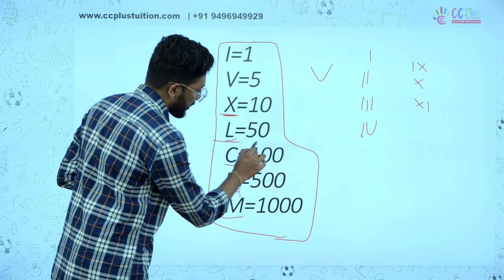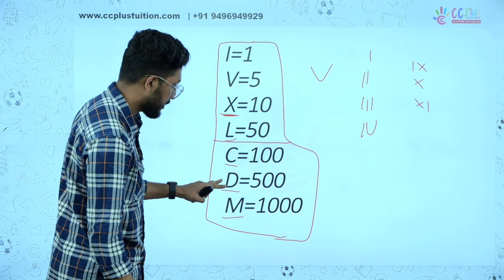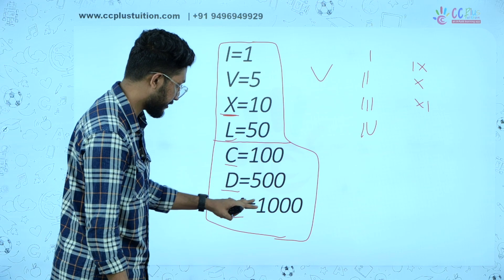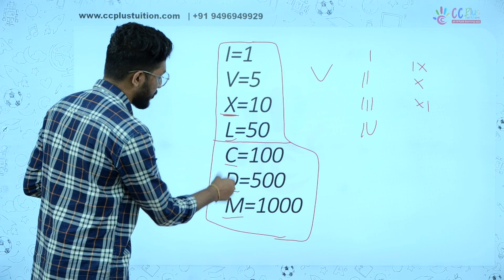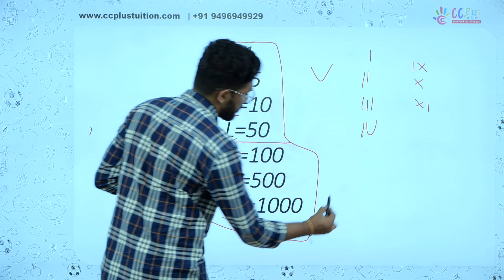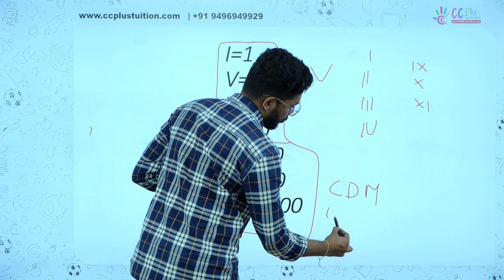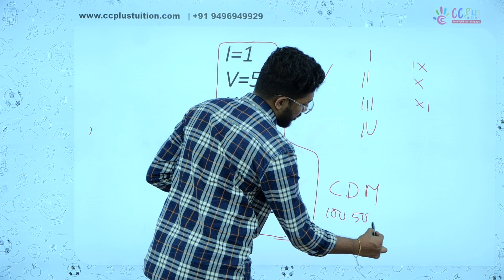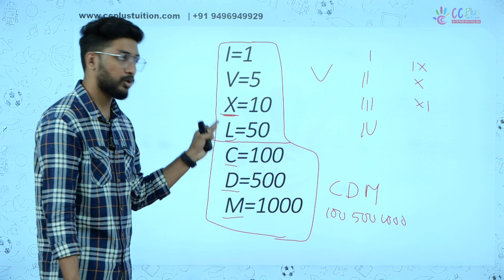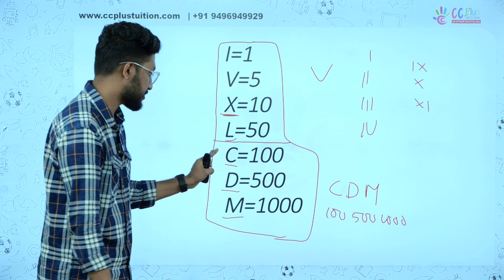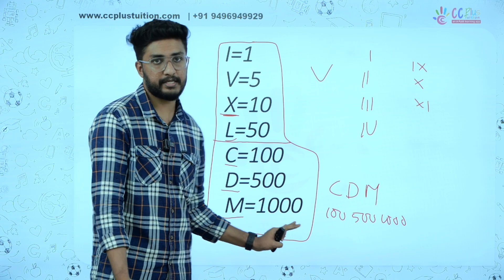There is a doubt: C is 100, D is 500, M is 1000. CDM — C is 100, D is 500, M is 1000.